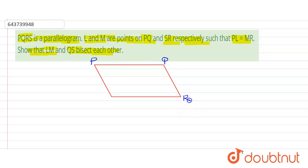This is R and suppose this is S and it is given PL is equals to MR. So let's take any point L on PQ and join them. So the figure will be somewhat like this.